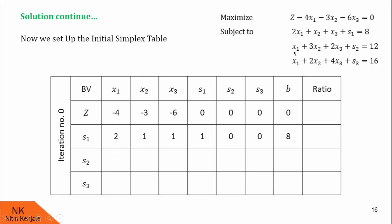In the second constraint, coefficients are 1, 3, 2. S1 has coefficient 0, s2's coefficient is 1, there is no s3 so its coefficient is 0, and RHS is 12. Similarly, we write the coefficients of the third constraint in the same way. I hope you understood this part.